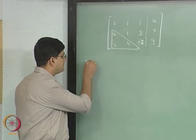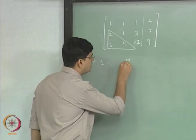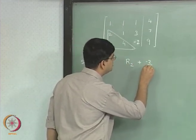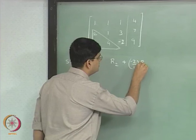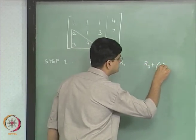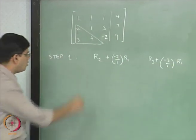The first step that we said was R2 plus (-2/1) into R1, and R3 plus (-3/1) into R1.